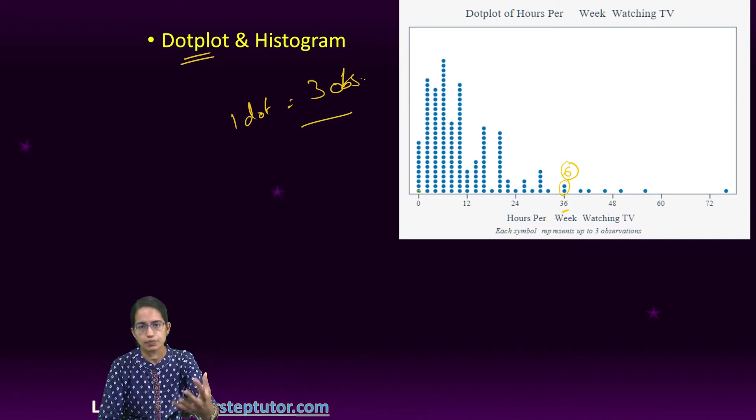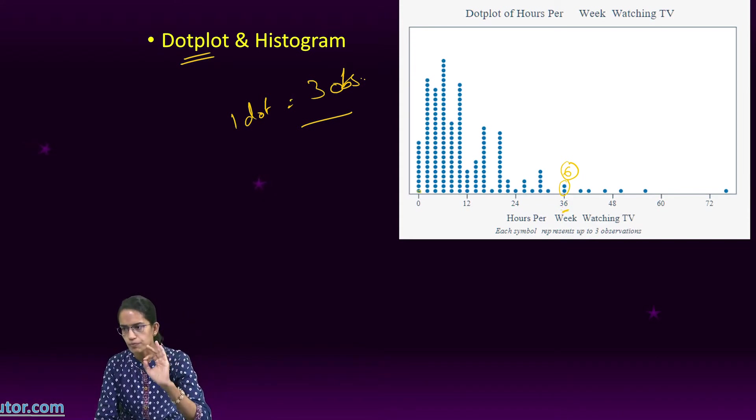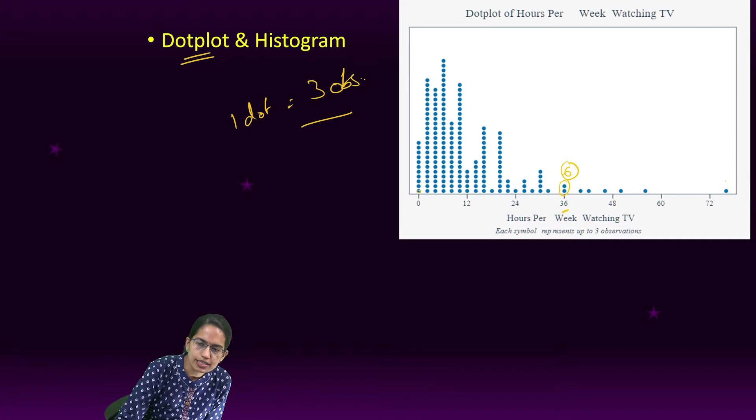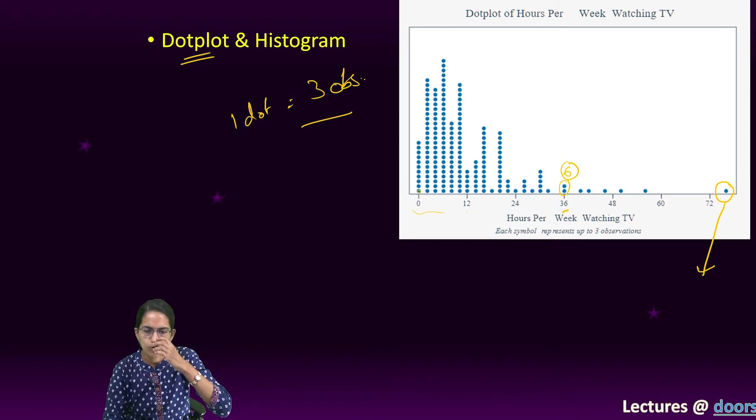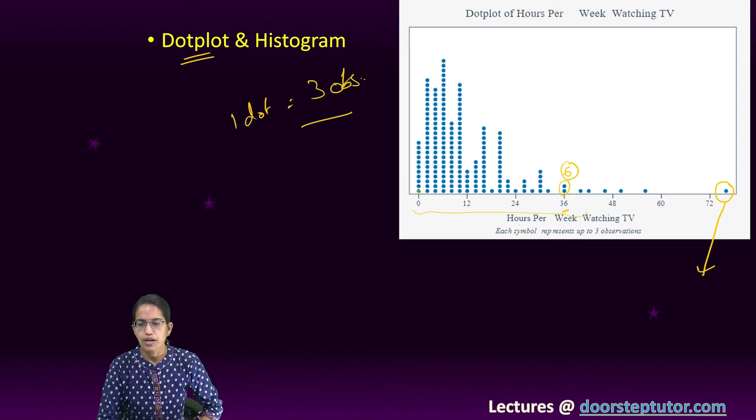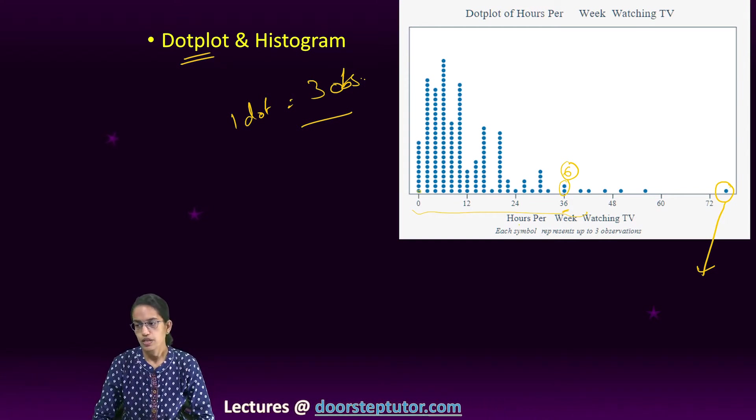That's how we make or explain the dotplot. In this case, there is an outlier beyond 72. Most of the dots are in the range of 2 to 36, but one dot is very far away at the range of 72.